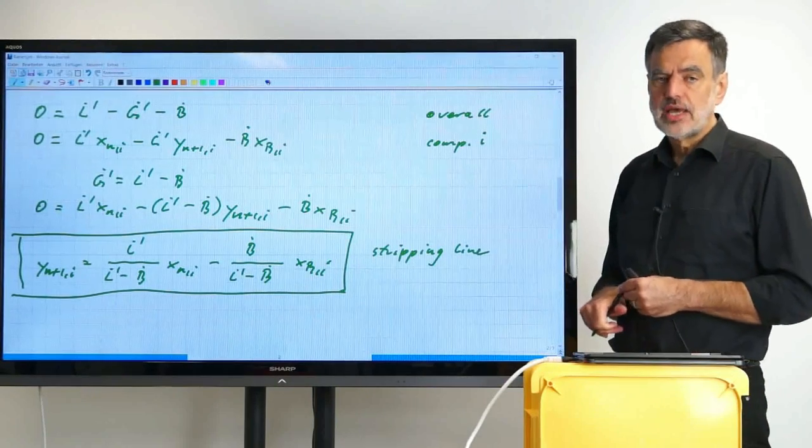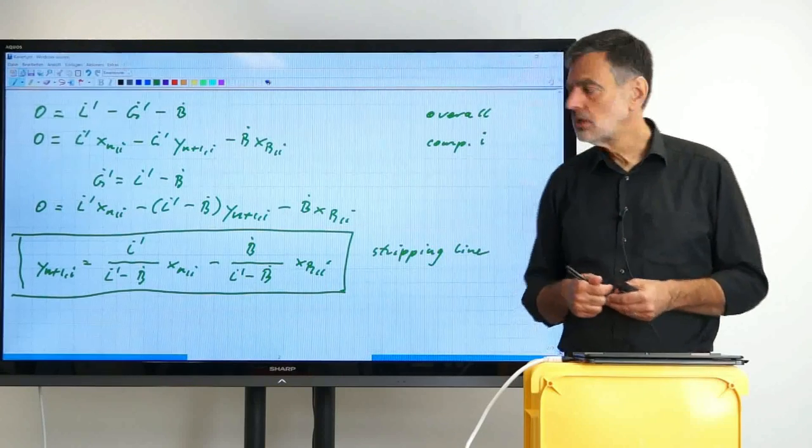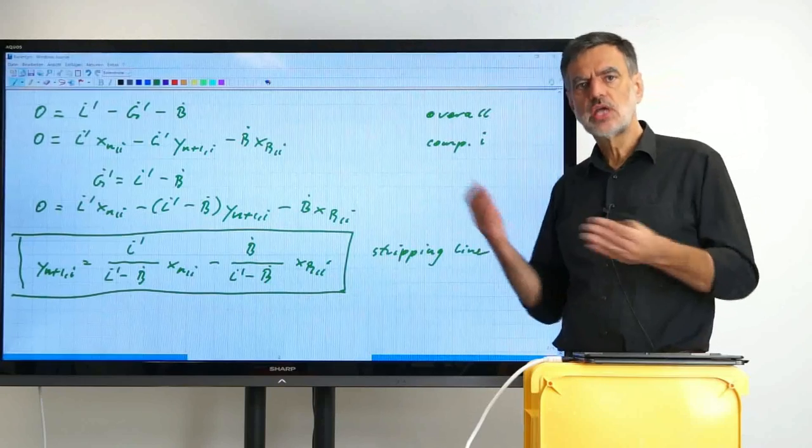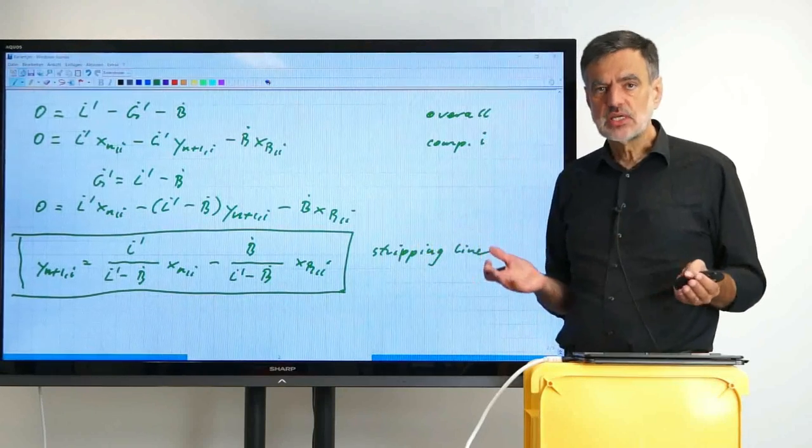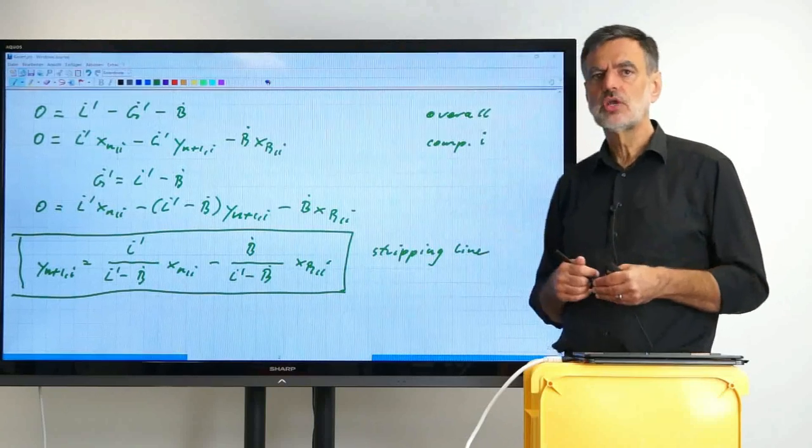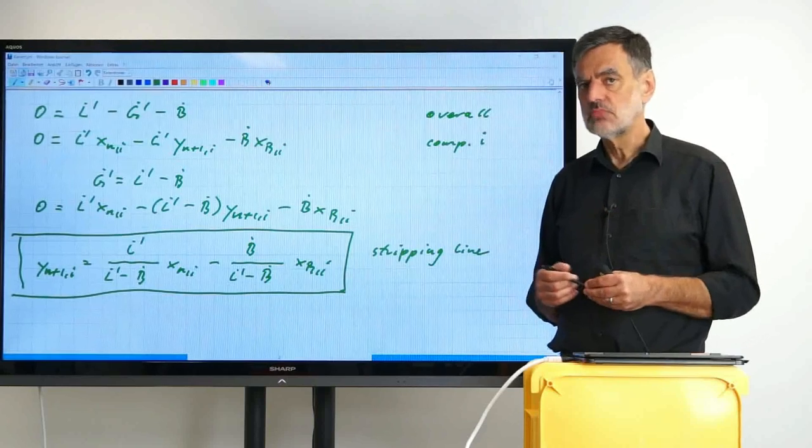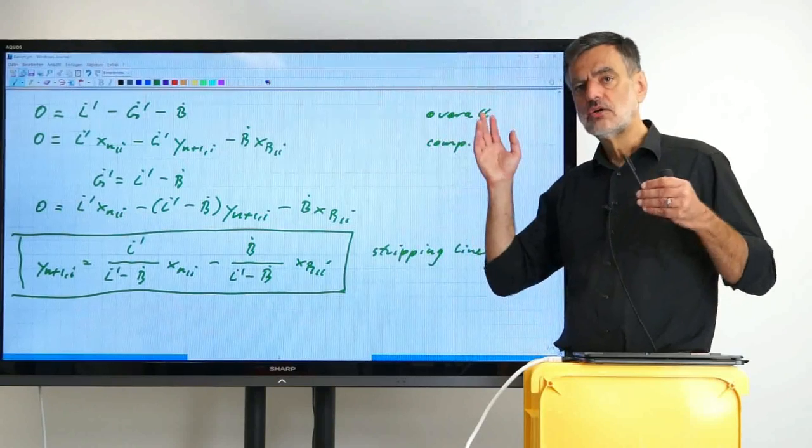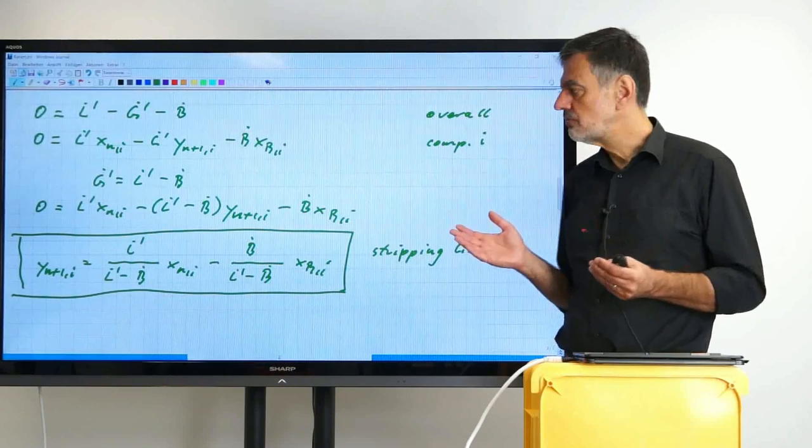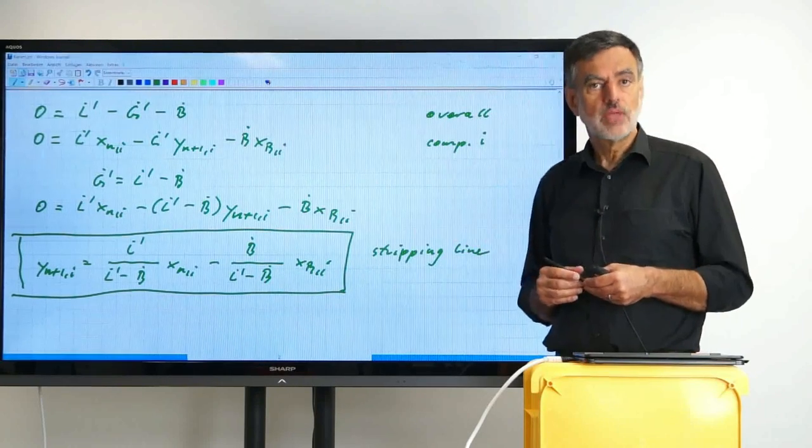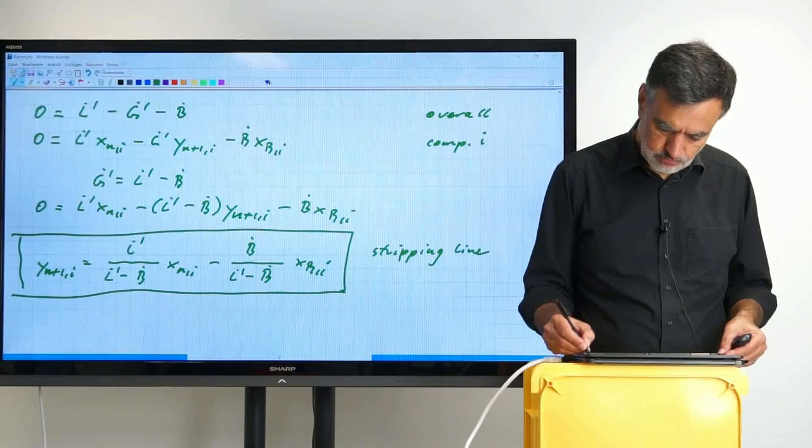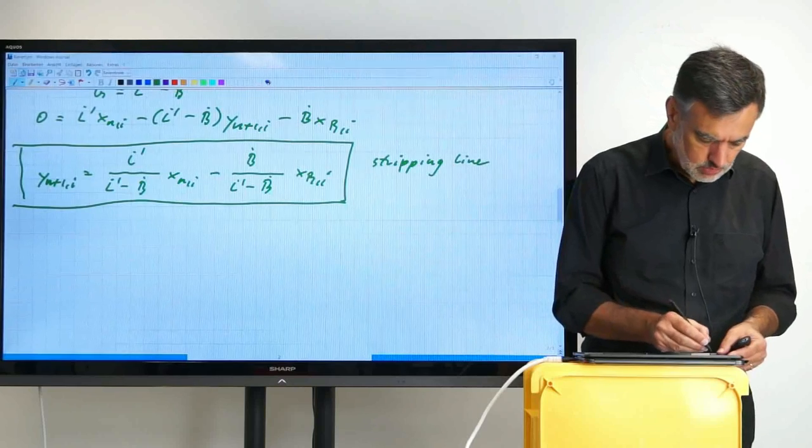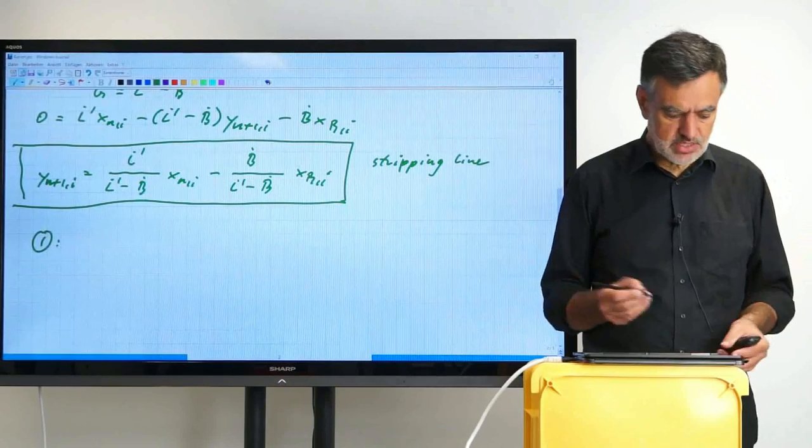Again, we would like to describe that line based on two points. For defining these two points, we could in principle define a reboiler ratio like we have defined a reflux ratio, but we don't need that actually. This would add only a dependent variable because the number of degrees of freedom of this overall problem are limited. If we have defined all the outer volume flow rates as well as the reflux ratio, there is no more degree of freedom. So we can do otherwise. We don't need that additional variable.